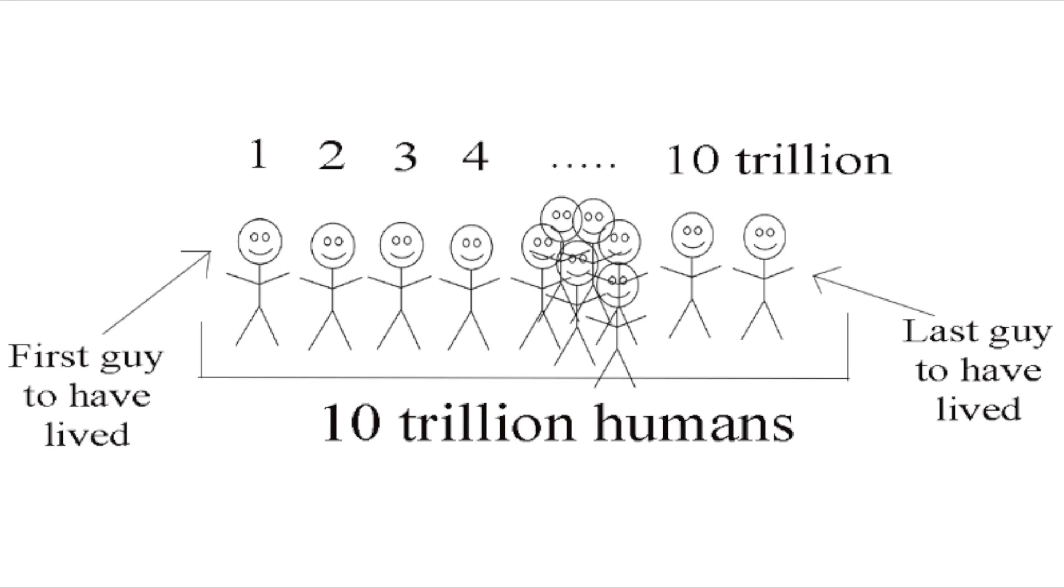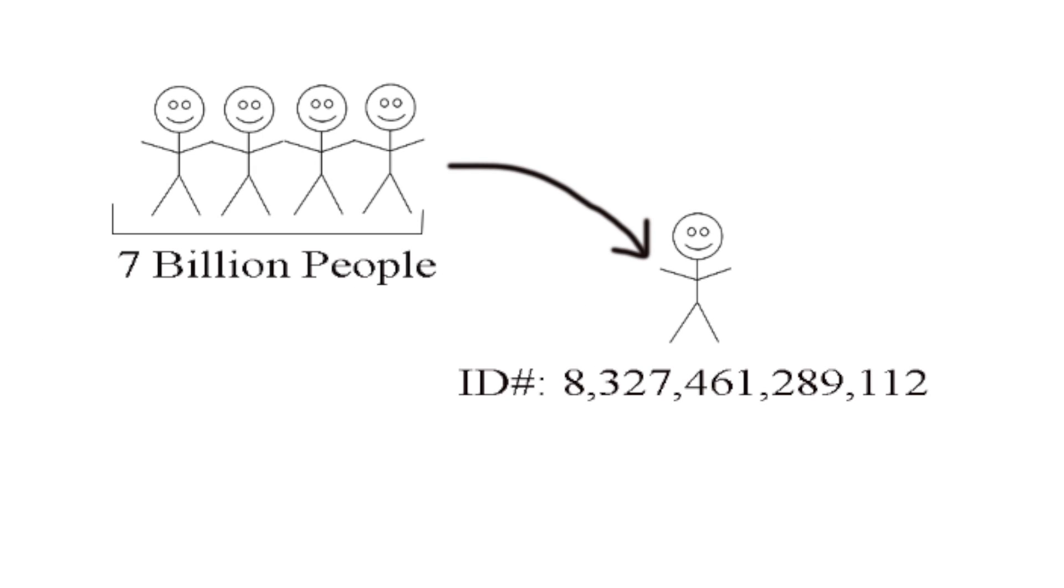For instance, suppose that 10 trillion humans will have ever lived, and we have given them all a number from 1 to 10 trillion. If we randomly picked a human today, chances are that he or she will not be among the first 10% of humans that have ever lived, and that his or her number will not be a number from 1 to 1 trillion. In other words, the person we picked will more likely have a number from 7 to 10 trillion instead.